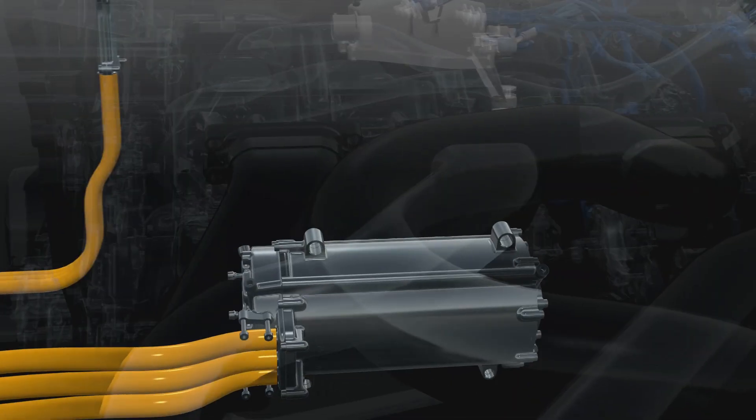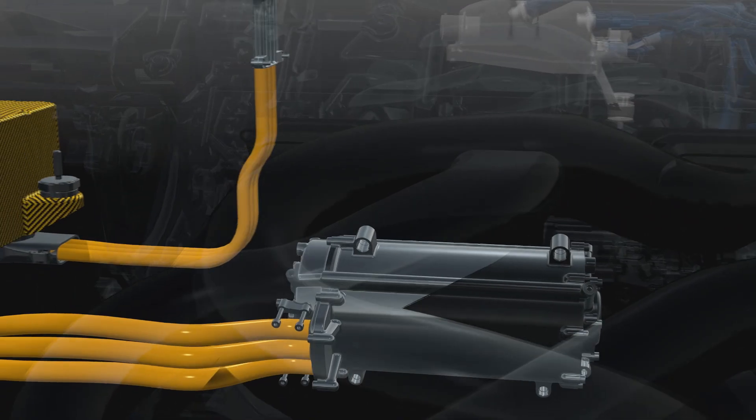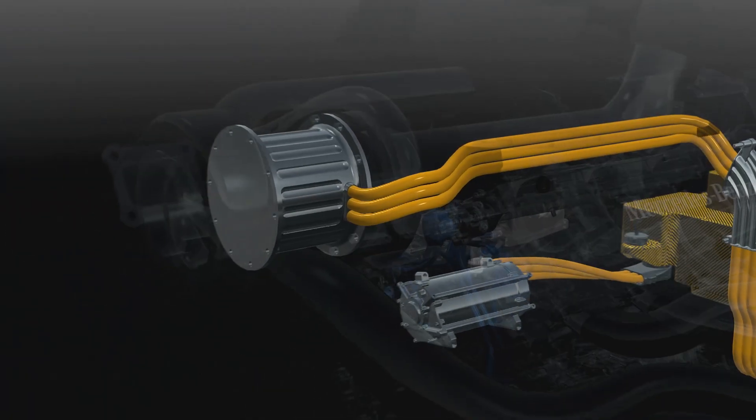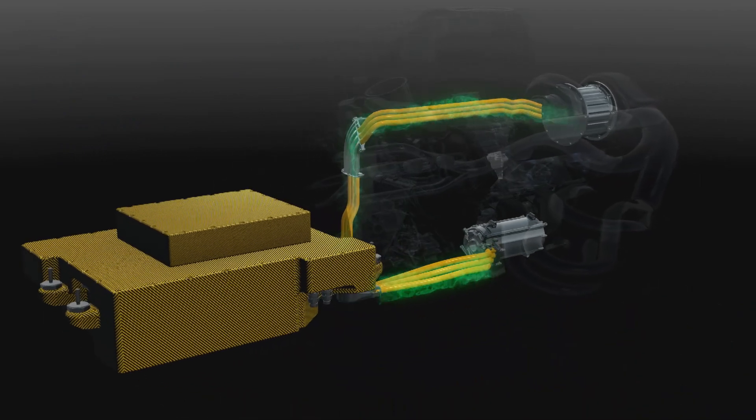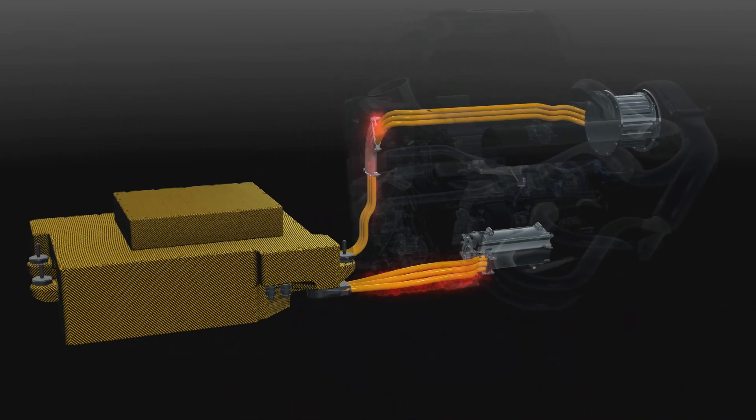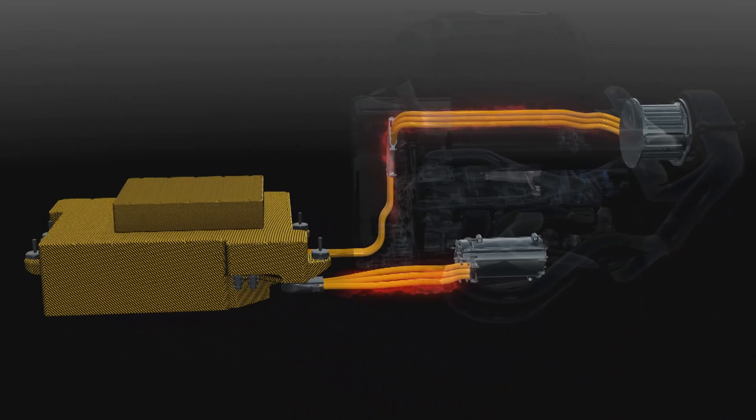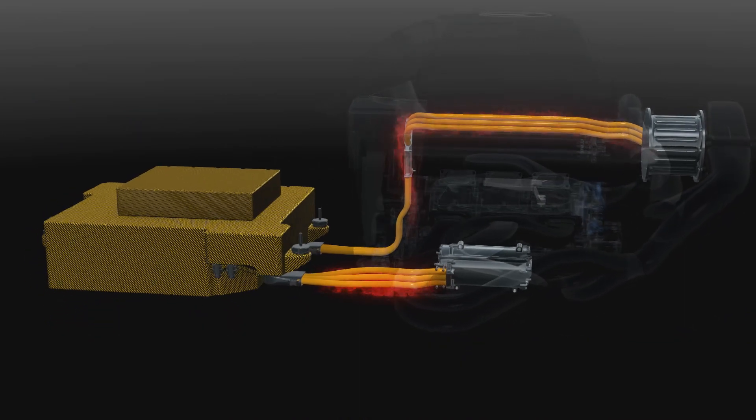The MGU-K harvests braking energy like the previous KERS system and the MGU-H harvests the turbo energy. Both send power to the energy store when working as generators and when deployed act as motors fed by the battery or each other's energy.